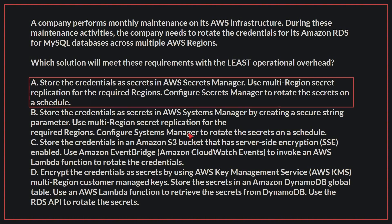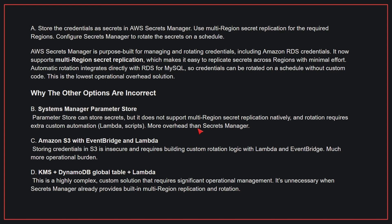The correct answer is A: Store the credentials as secrets in AWS Secrets Manager, use multi-region secret replication for the required regions, and configure Secrets Manager to rotate the secrets on a schedule. AWS Secrets Manager is purpose-built for managing and rotating credentials, including Amazon RDS credentials. It supports multi-region secret replication, making it easy to replicate secrets across regions with minimal effort. Automatic rotation integrates directly with RDS for MySQL, so credentials can be rotated on a schedule without custom code — the lowest operational overhead solution.